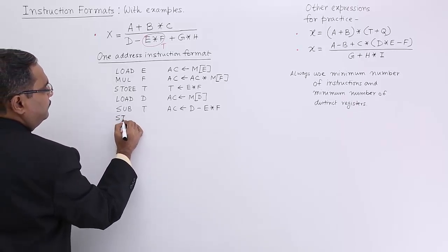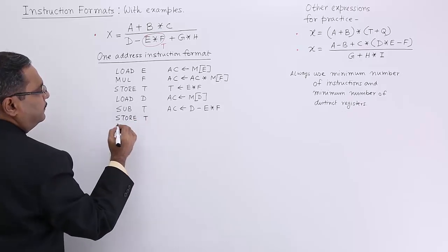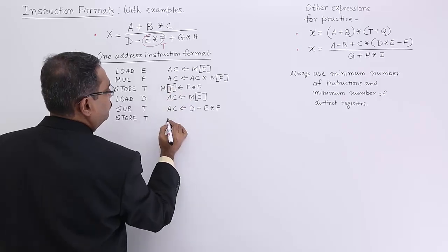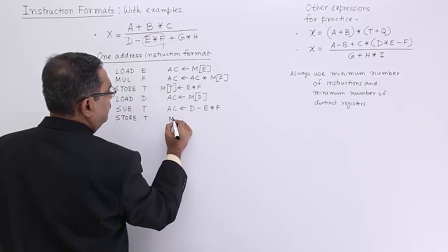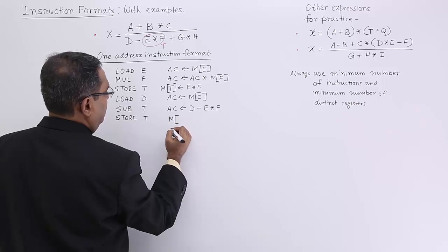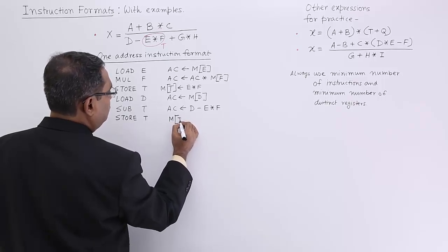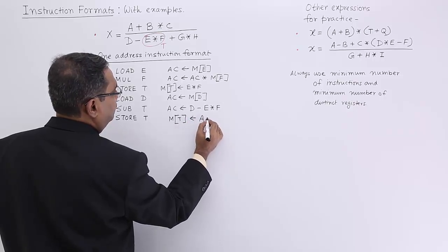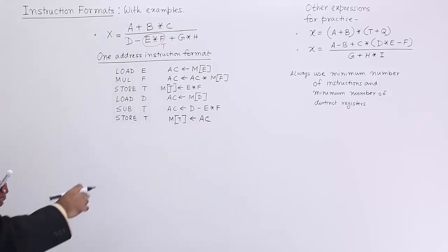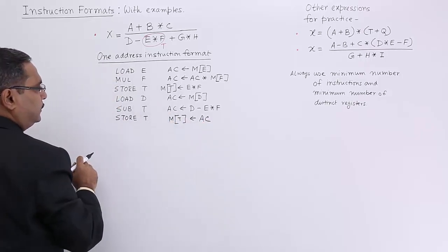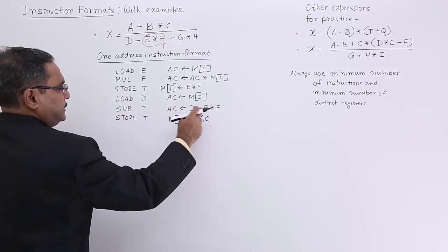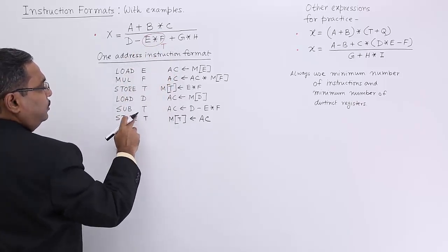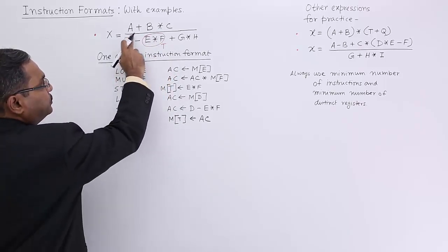Now I shall store it to t: STORE t. The memory content for variable t is getting initialized by the current content of the accumulator. The accumulator is containing D minus E*F. So this result of SUB t has been kept in t.